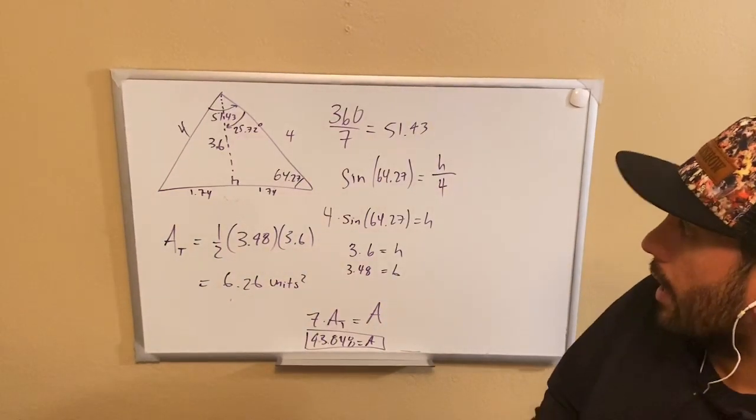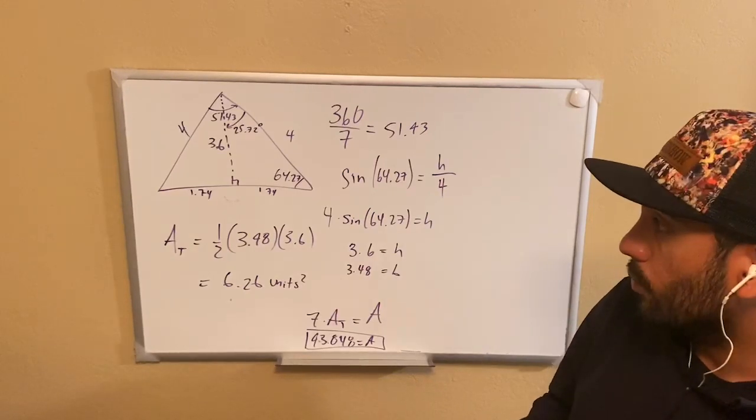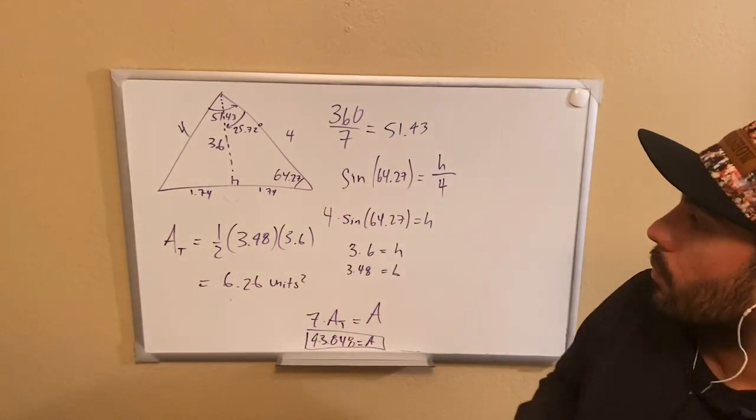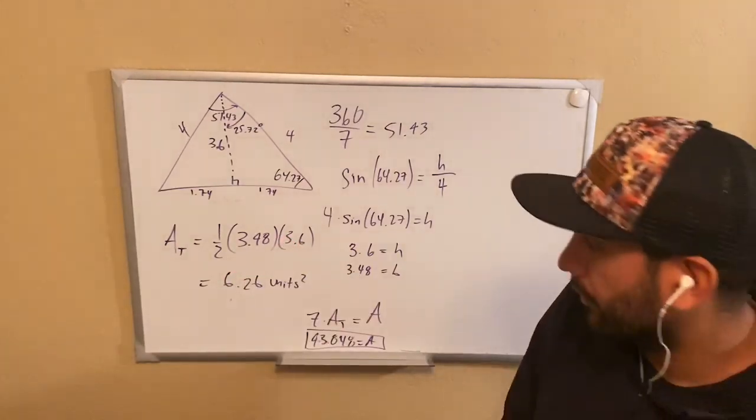But we need to know how to find these angles. So we need to know angle relationships. We need to know our SOHCAHTOA. That's a given. And we need to know how to find the area of the triangle. And of course, that's 1 half base times height.